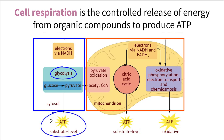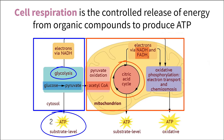From here, the pyruvate molecules get altered with a link reaction to create a molecule called acetyl-CoA, which then enters the citric acid cycle, also called the Krebs cycle. A series of reactions take place within the Krebs cycle creating high energy carrying molecules, like NADH and FADH2, along with a small amount of ATP.